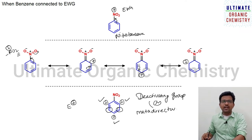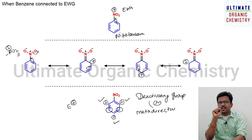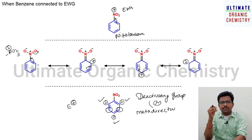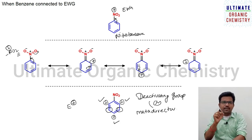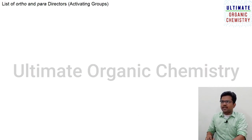To conclude: when an electron donating group is present, you call it an activating group or ortho-para director. When an electron withdrawing group is present, you call it a deactivating group and meta director. Now let us have more examples — this is a very important topic for NEET and JEE students. Here is the list of ortho-para directors, otherwise known as activating groups or activators.